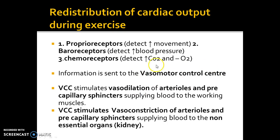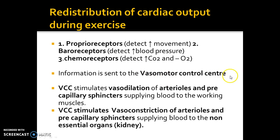You'll want to make a note of this. The vasomotor control center is responsible for changing the width of blood vessels, and it's also responsible for something called vascular shunt. Vascular shunt is basically the redistribution of cardiac output during exercise — it's another term for it.